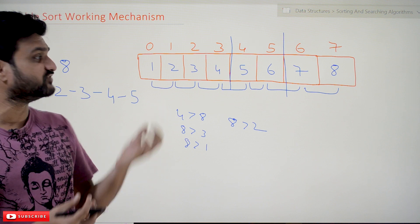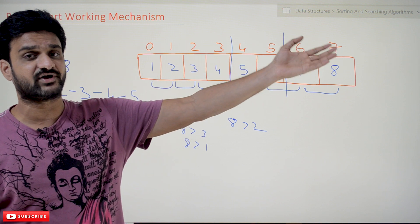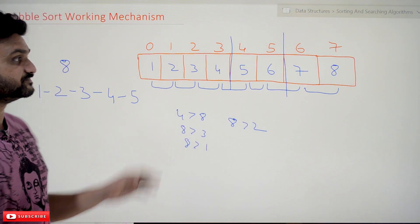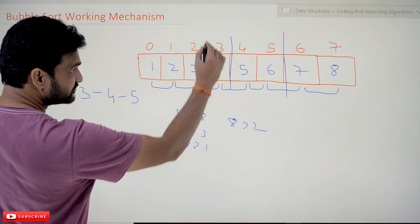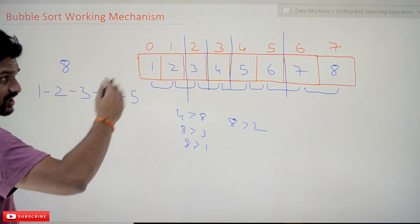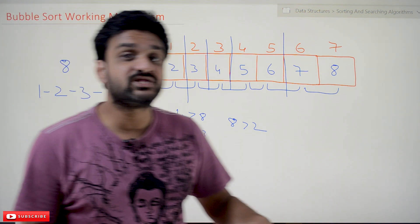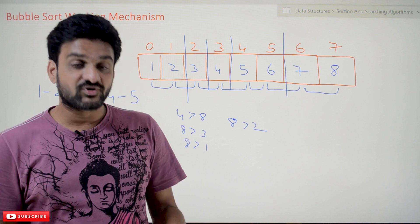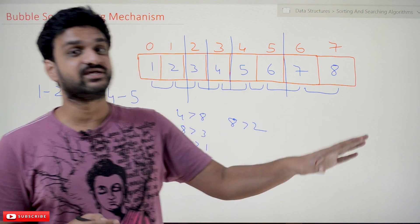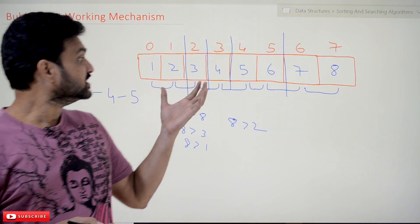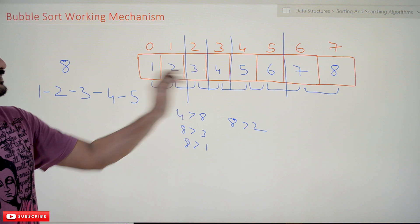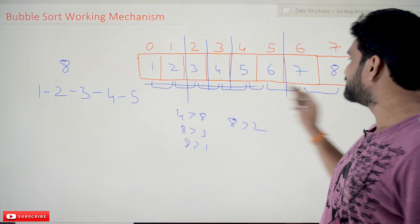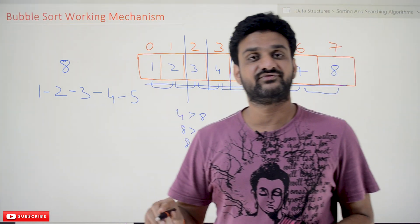In the original bubble sort, we have to do comparisons for all iterations — all eight iterations — even though the elements are already in sorted order. The next iteration only compares these elements, and the one after that only these two, but all comparisons need to be done. This point is very important: focus on it especially when studying the algorithm, where you will clearly see what we have discussed.